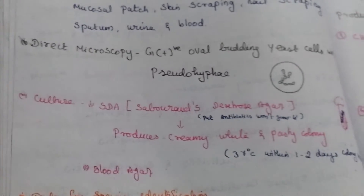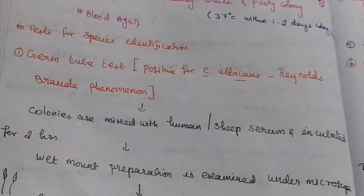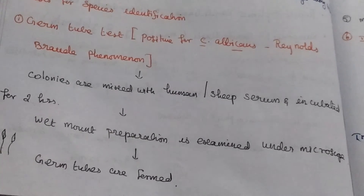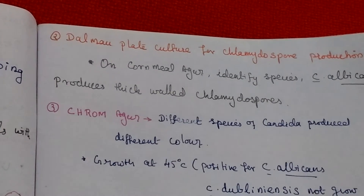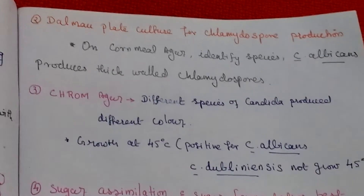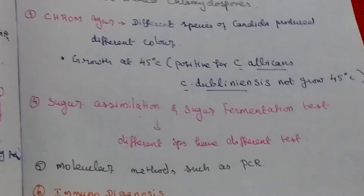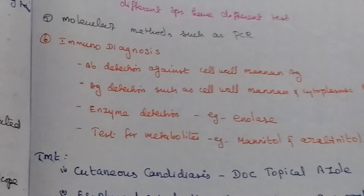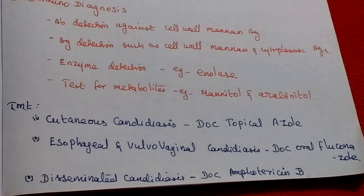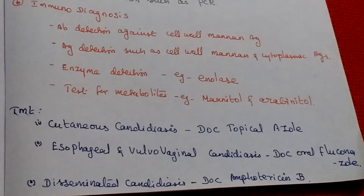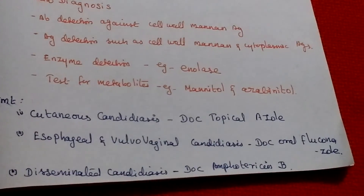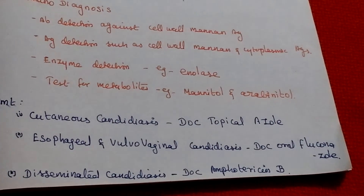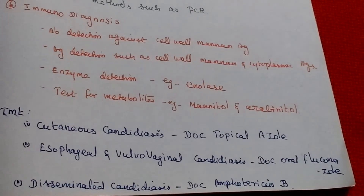Laboratory diagnosis is very important. It involves specimen collection, direct microscopy, culturing, and tests for species identification including germ tube method, Dalmo plate culture method, chromagar method, sugar assimilation and fermentation tests, molecular methods, and immunodiagnosis. Treatment includes azoles for cutaneous candidiasis, fluconazole for esophageal and vulvovaginal candidiasis, and amphotericin B for disseminated candidiasis.